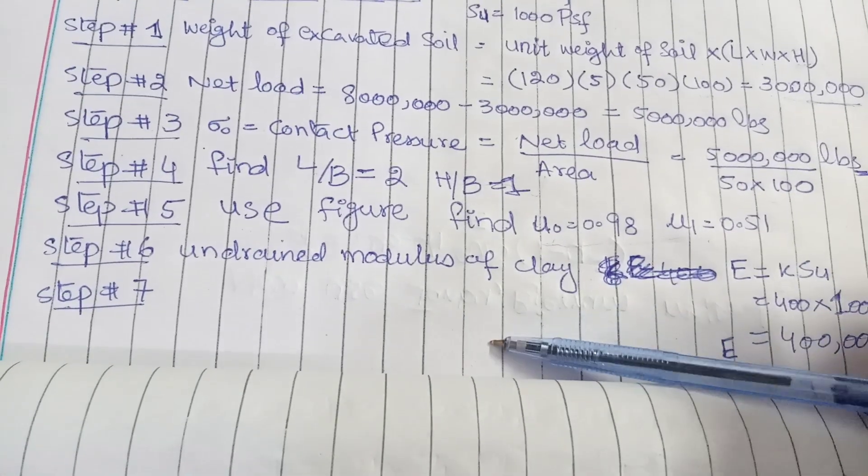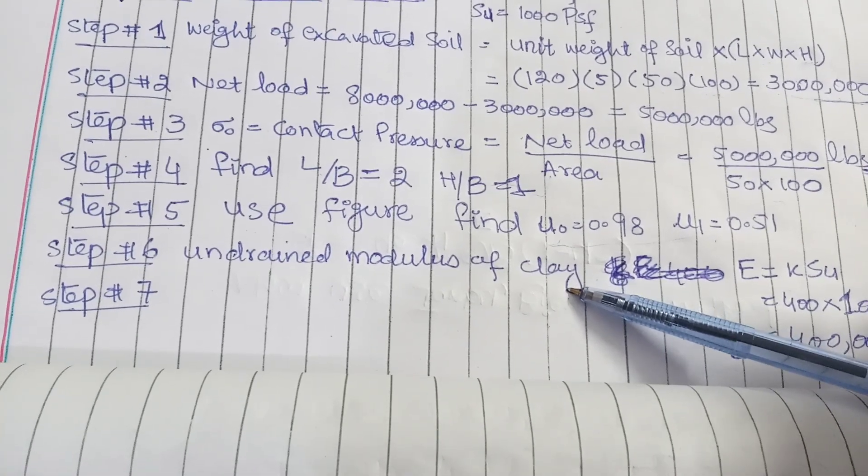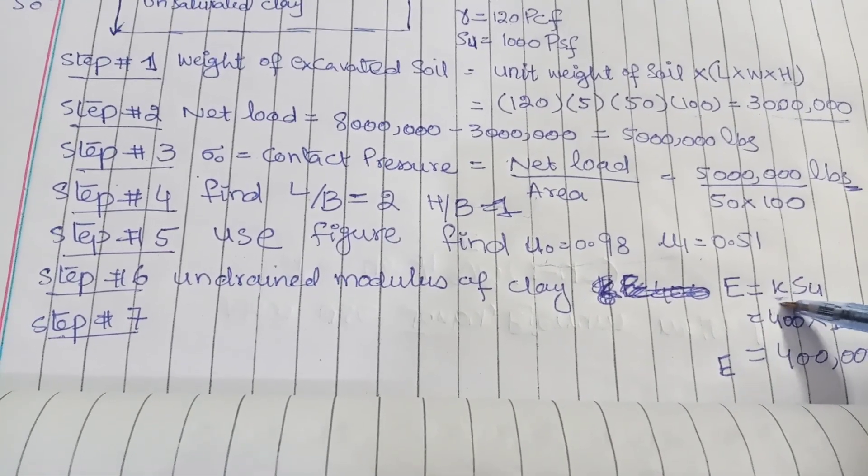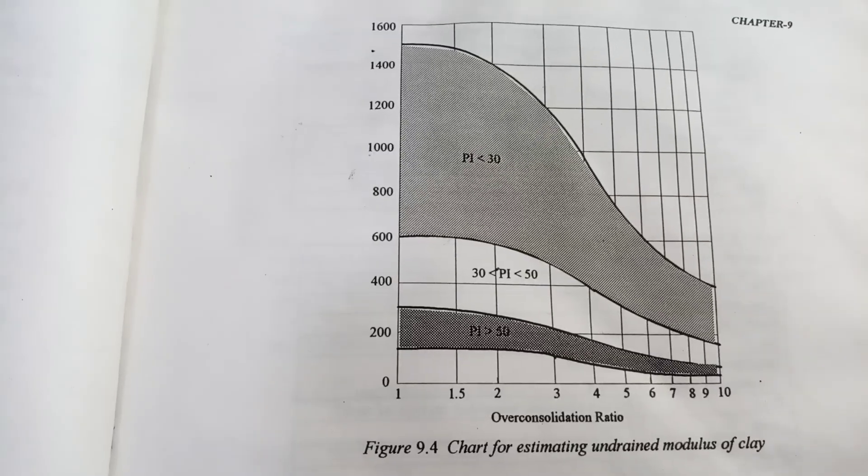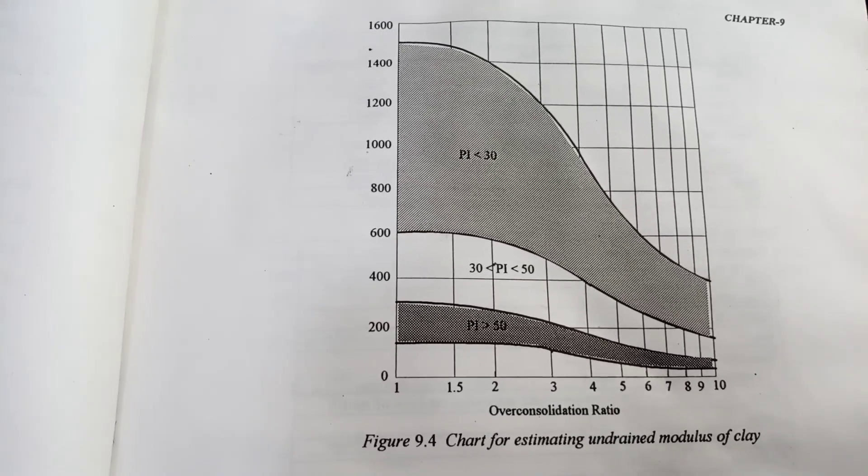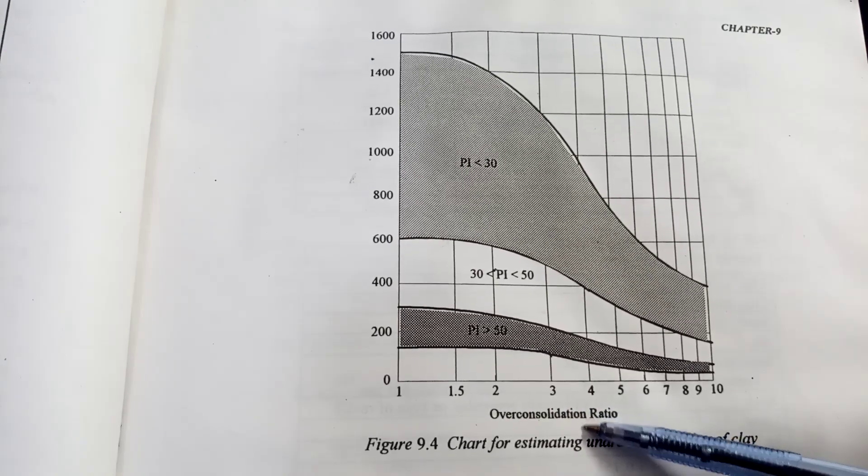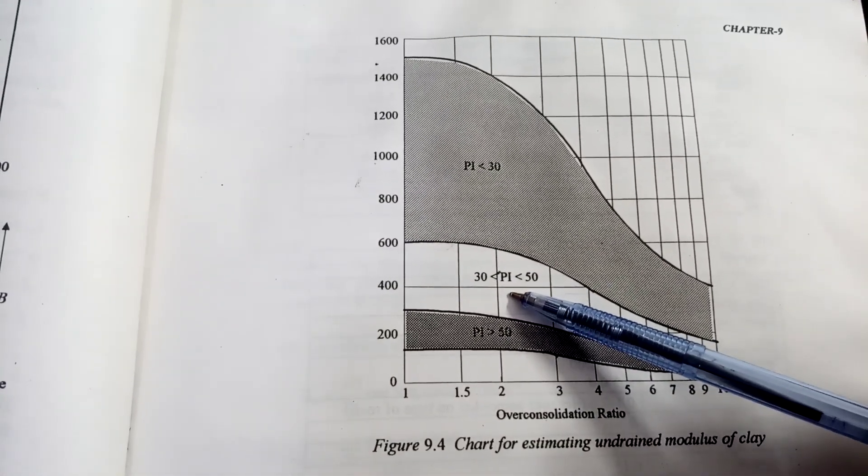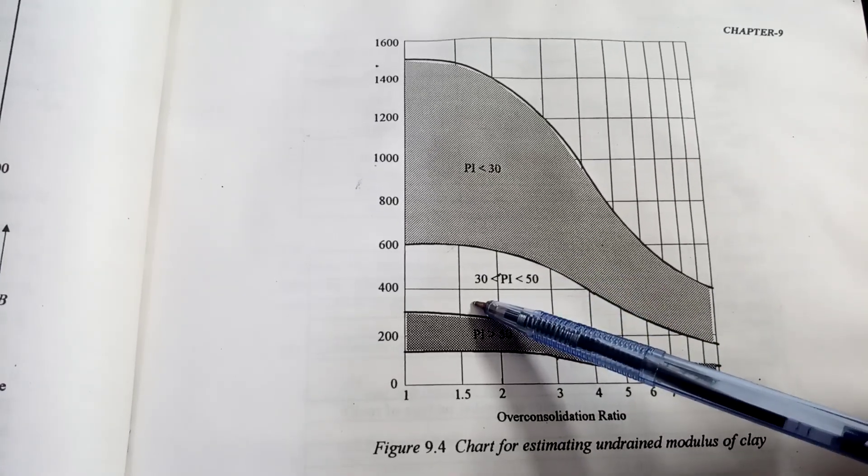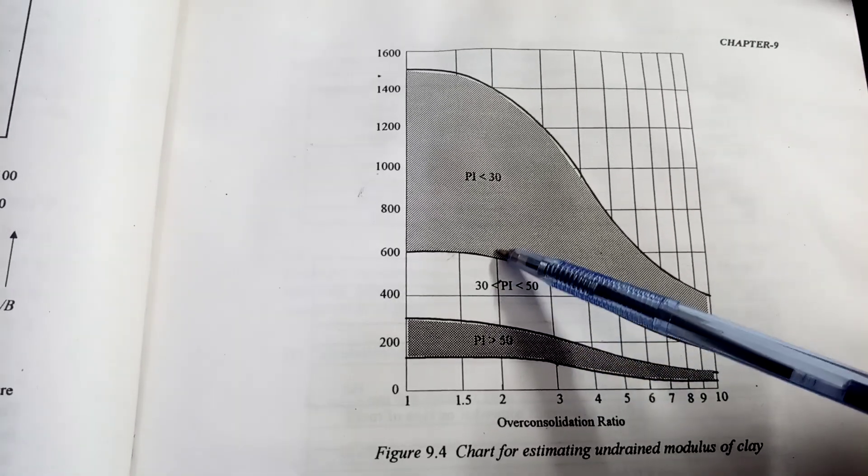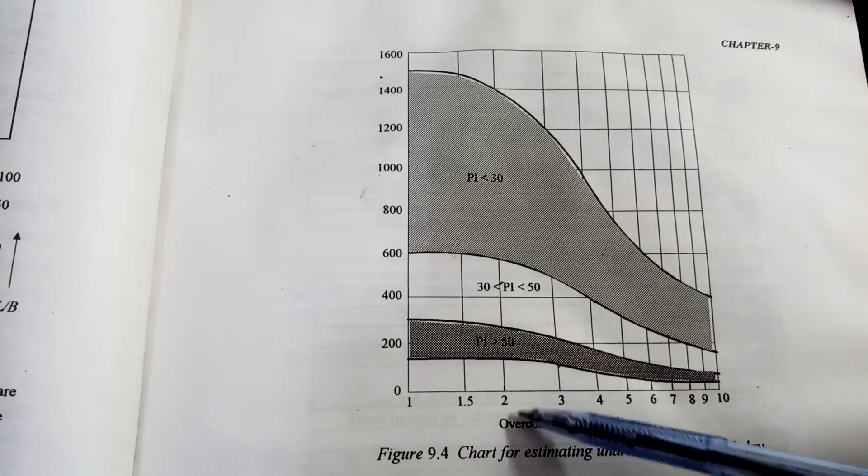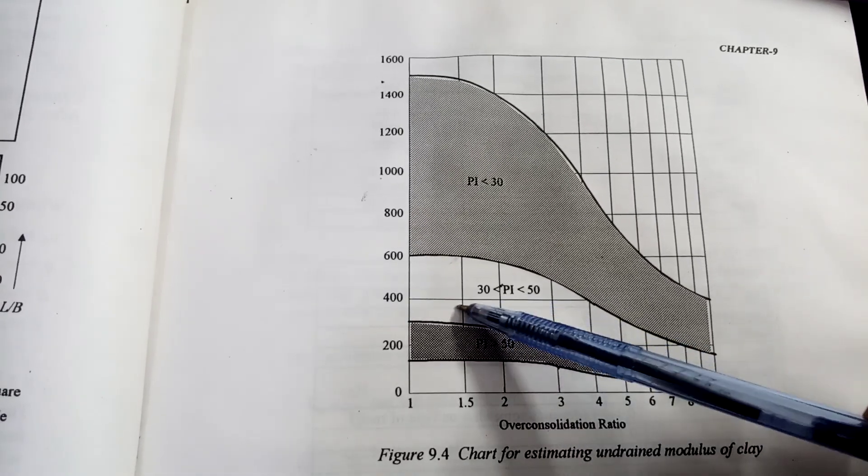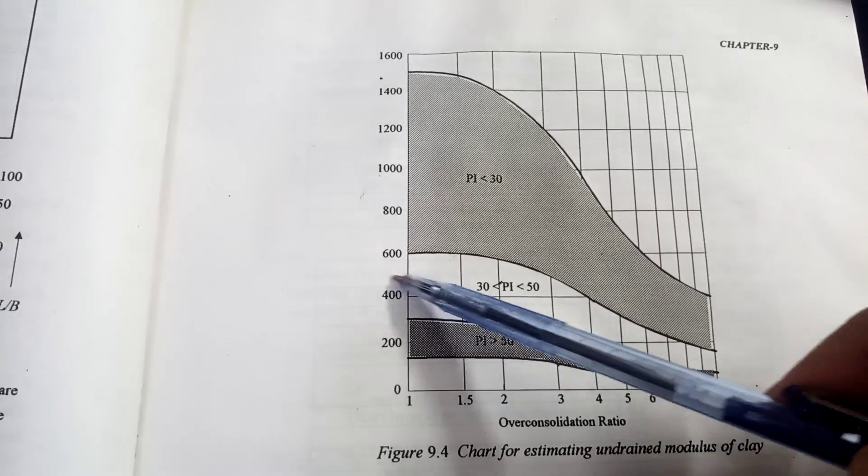Step number 6: we will calculate the formula u1 is equal to k into f/u. So what is k? k is a coefficient value. I will show you how we can find this k value. This is a chart. In this chart we have over-consolidation ratio on the x-axis and the y-axis is the value of k. In our case, our PI is 40, so it lies in this region. According to graphical manipulation, the value will be equal to the y-axis, so k value is 400.